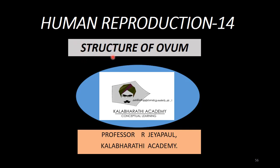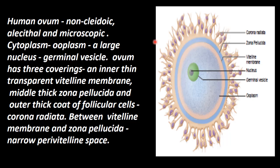If we look at the ovum, that is the female gamete in humans, it is not covered by an external shell. It is non-cleidoic. And alecithal — that is, egg yolk is very, very less, negligible — so it is called alecithal.